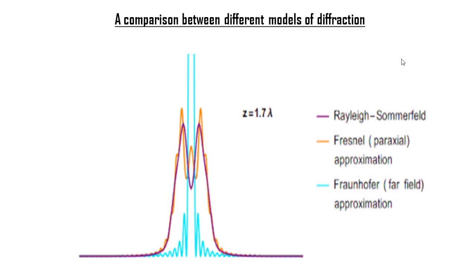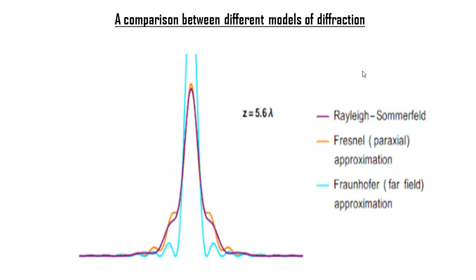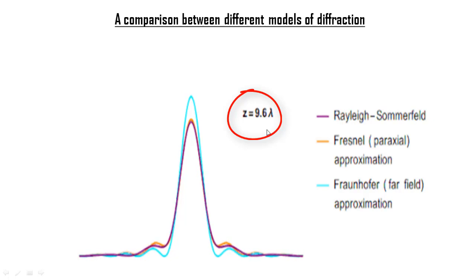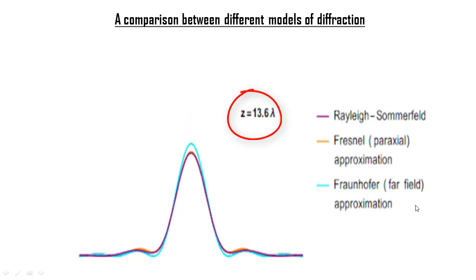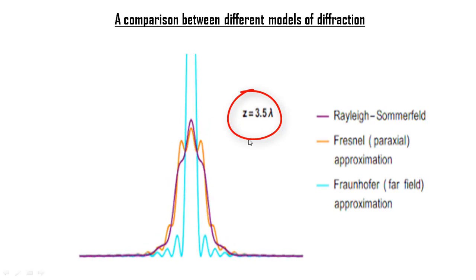This is an animation that compares the three different mathematical models that explain diffraction. The parameter z denotes the distance from the aperture where diffraction is taking place. We've talked about Fresnel's model and Fraunhofer's model. The Rayleigh-Sommerfeld model of diffraction is also called the scalar model of diffraction, but we will not talk about it here. The z parameter is increased gradually.